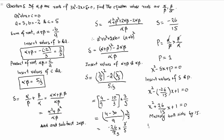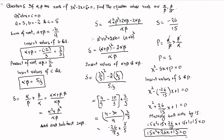Multiplying through by 15: 15x squared plus 15 times 26 by 15 times x plus 15 times 1 equals 15 times 0. The 15s cancel in the middle term, giving 26x, and 15 times 1 is 15, and 15 times 0 is 0. So the required quadratic equation is 15x squared plus 26x plus 15 is equal to 0.